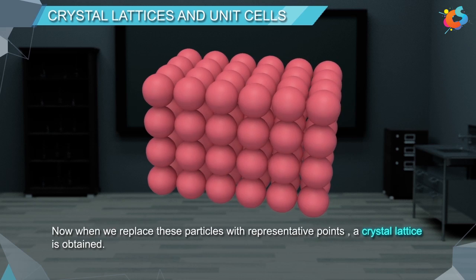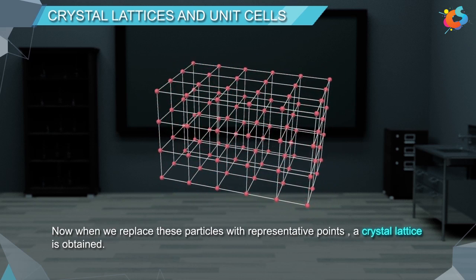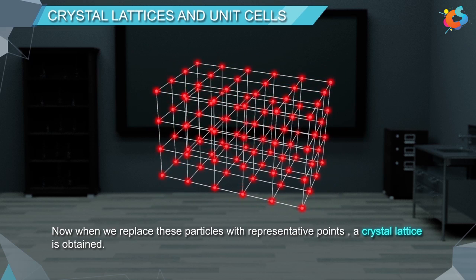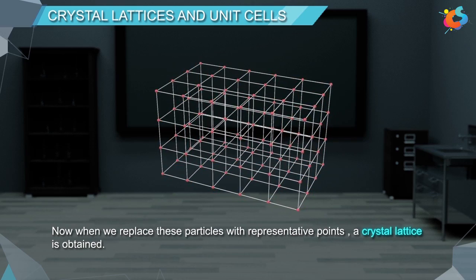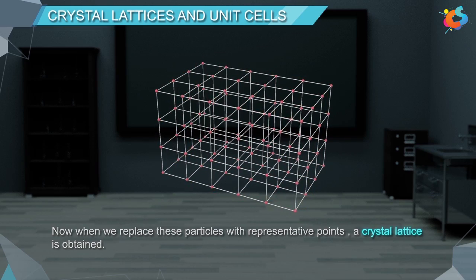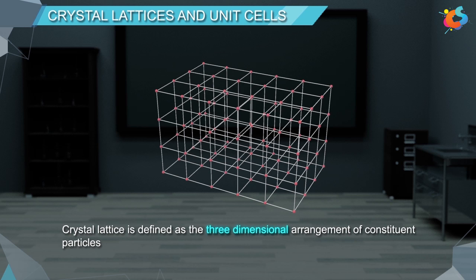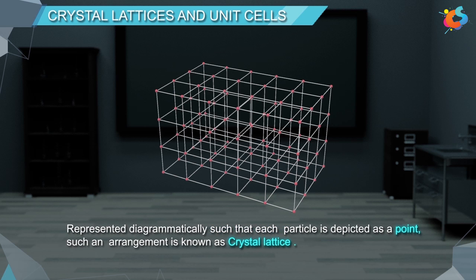Now, when we replace these particles with representative points, a crystal lattice is obtained. Crystal lattice is defined as the three-dimensional arrangement of constituent particles represented diagrammatically such that each particle is depicted as a point. Such an arrangement is known as crystal lattice.